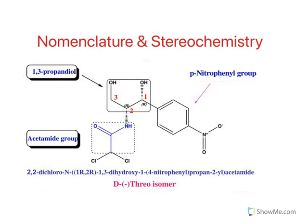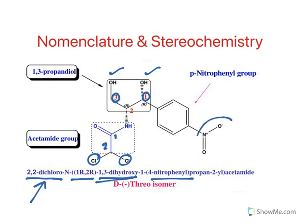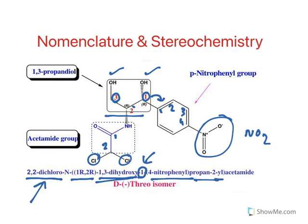The IUPAC nomenclature is 2,2-dichloro-1-(or 1,3-dihydroxy). The carbonyl carbon is the first carbon, the second carbon has two chlorine substitutions — hence 2,2-dichloro. The 1,3-dihydroxy refers to hydroxy groups at positions one and three. The four-nitrophenyl indicates a nitro substitution at the fourth position of the phenyl ring. At the second carbon of the propane group there is an acetamide substitution.